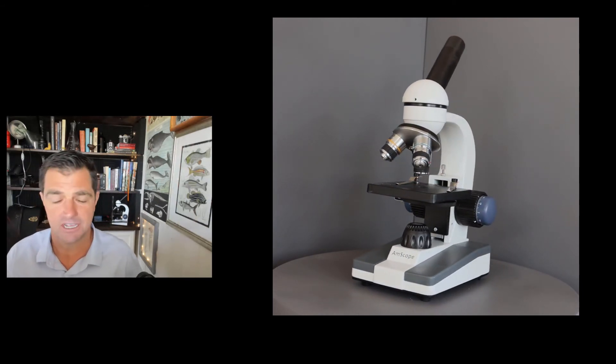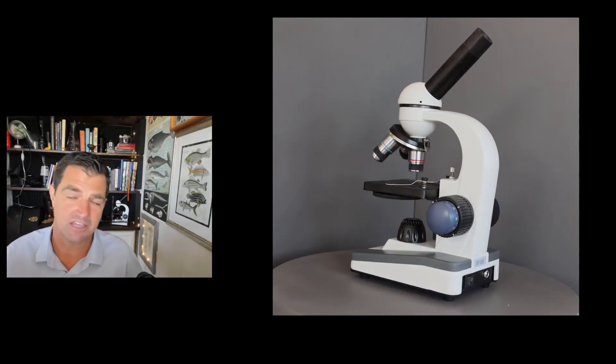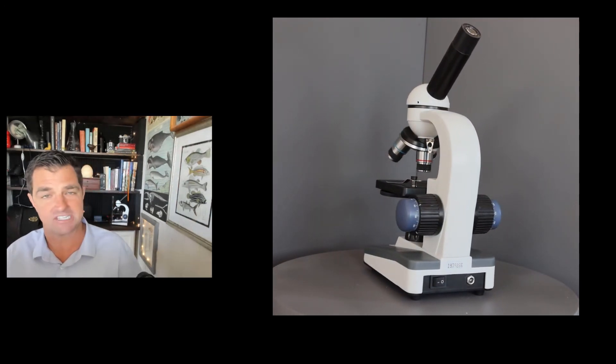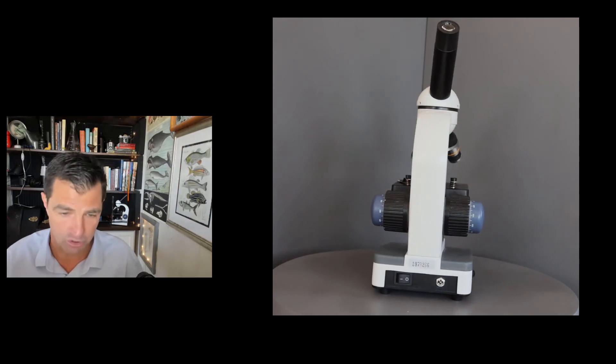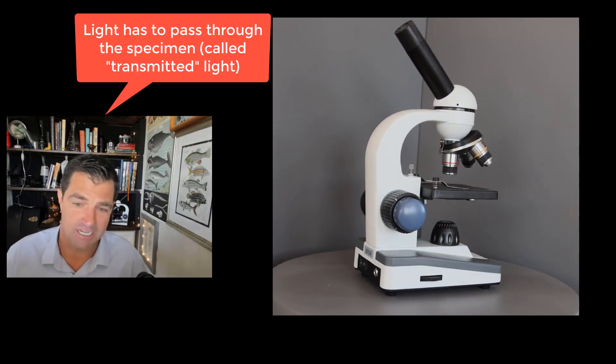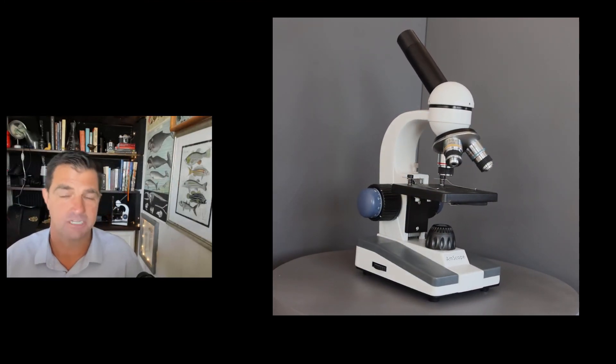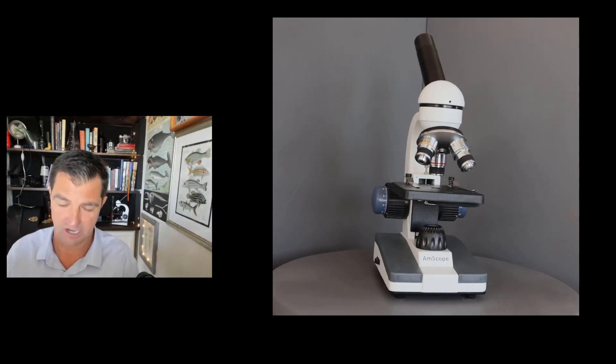As a light microscope, the specimens that you're going to look at have to be very thin because the light has to actually be able to go through the specimen. So hopefully that gives you a basic introduction to the parts of the microscope, and coming up next, I'm going to teach you how to focus it on something.